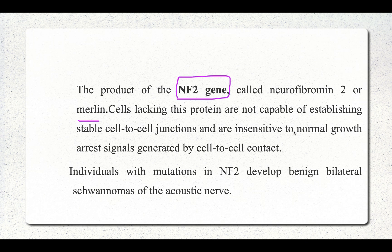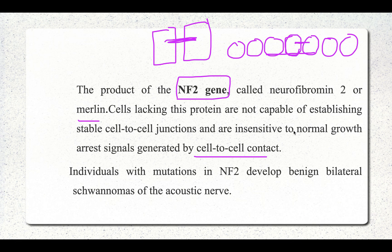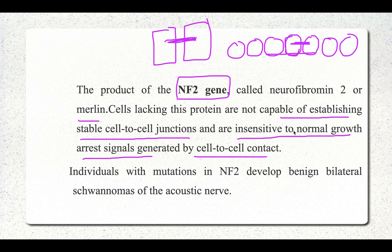Neurofibromin 2 (merlin) is involved in cell-to-cell contact signaling. Normally, when cells make contact with each other, growth arrest occurs. Cells lacking the merlin protein are not capable of establishing stable cell-to-cell junctions and are therefore insensitive to normal growth arrest signals generated by cell-to-cell contact. Mutations in NF2 lead to schwannomas of the acoustic nerve.